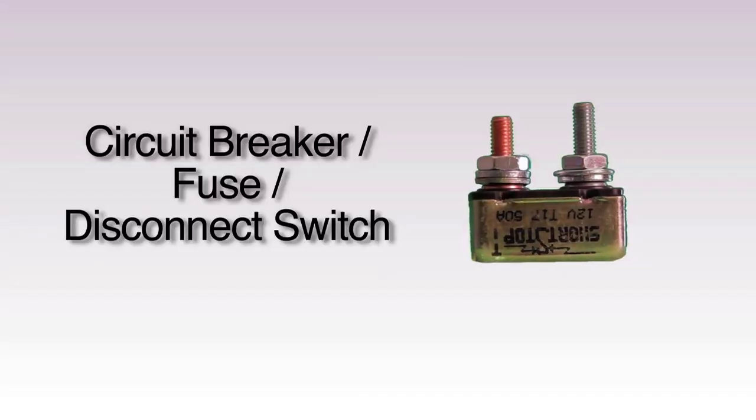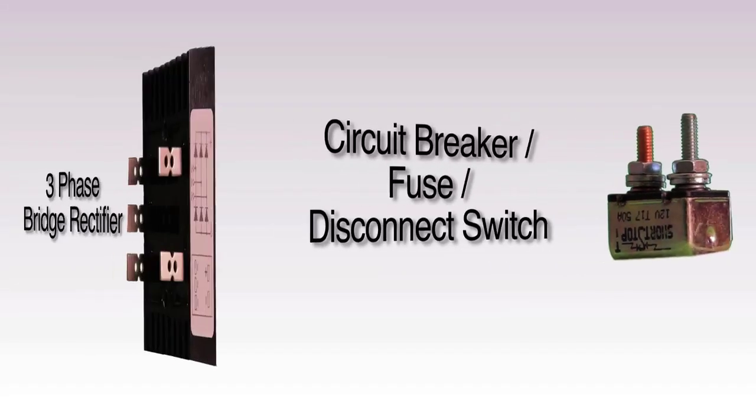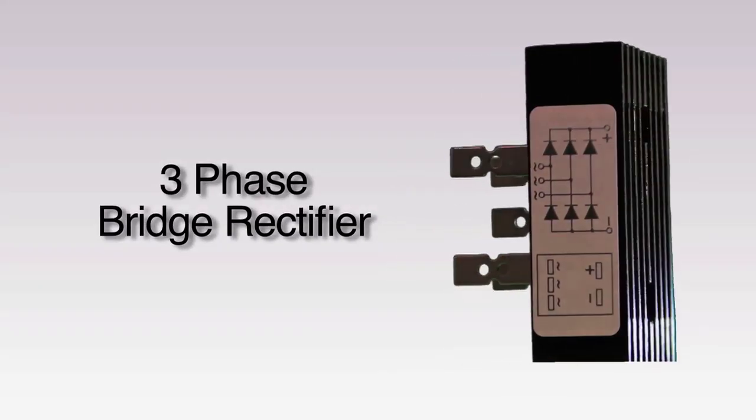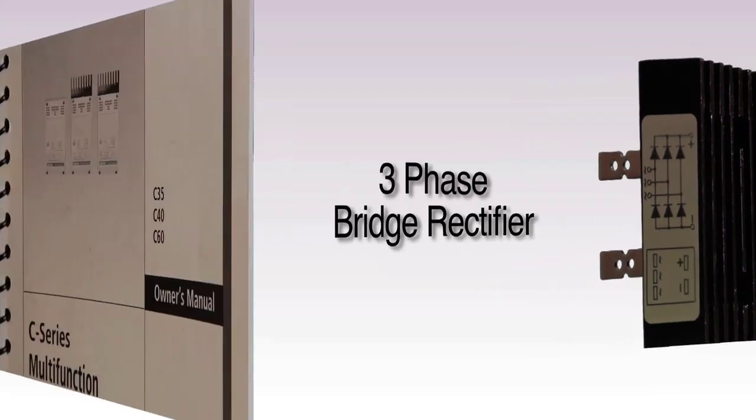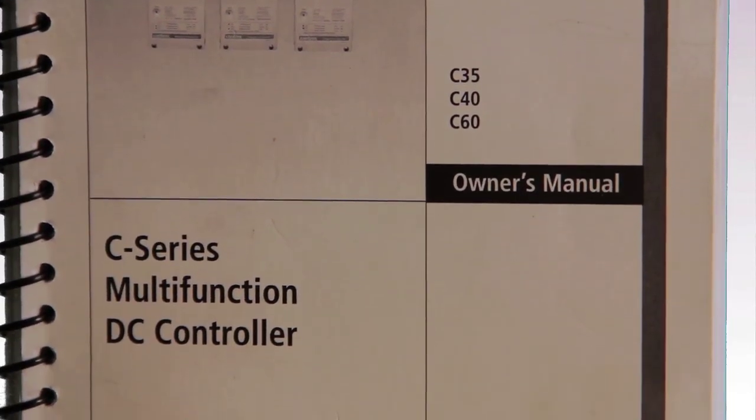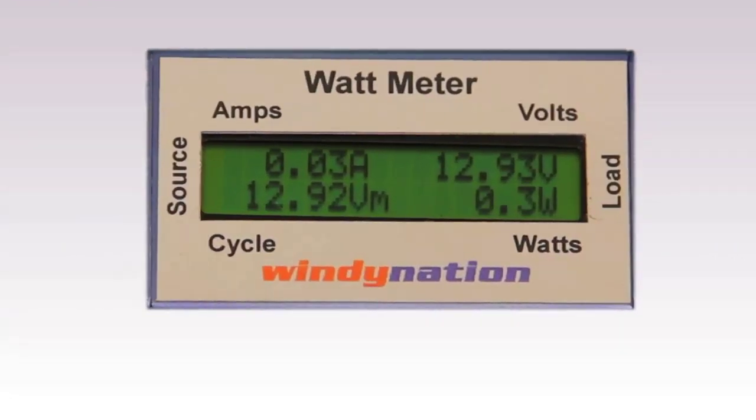Some other components we'll use are automatic reset circuit breakers, but you could use a fuse or a disconnect switch, a three-phase bridge rectifier, which converts the three-phase AC electricity produced by the wind turbine to DC electricity, and appropriately rated wire and connection terminals, which you can find in the user manual. And we'll also show you the optional WindyNation wattmeter.